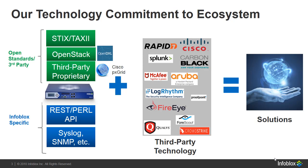In addition to querying inbound data, changing system configurations, and using the querying interface, you can use the third-party system RESTful API or DXL fabric to send outbound notifications to prioritize your security needs — with Infoblox detecting new hosts or networks or managing network access control.